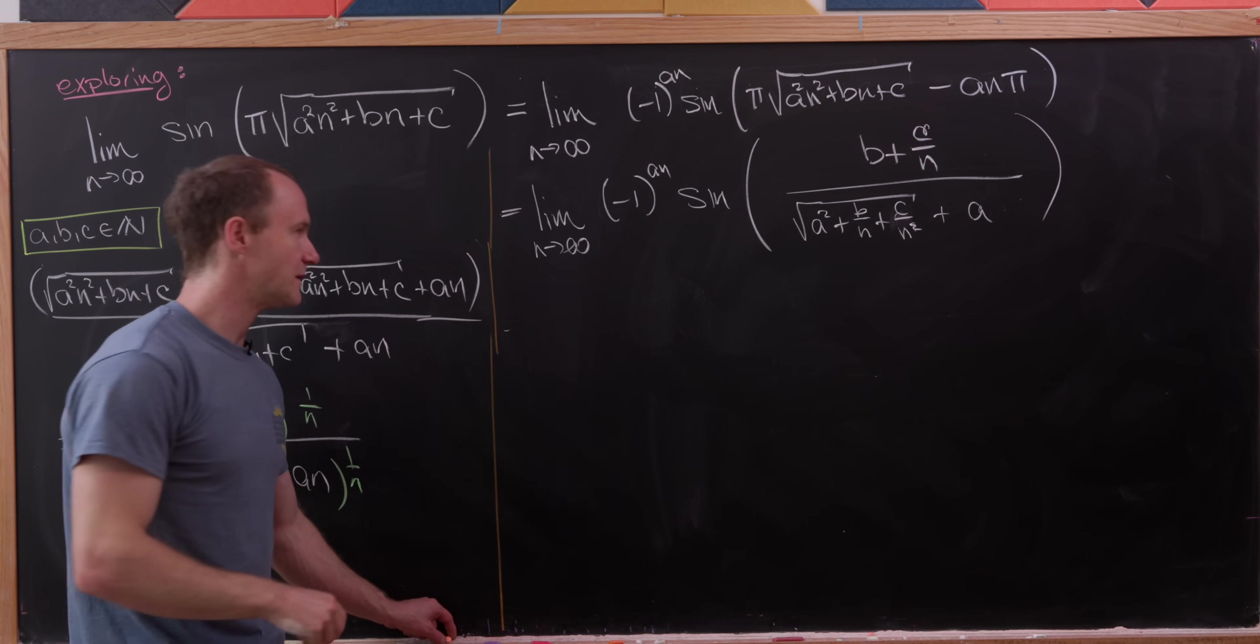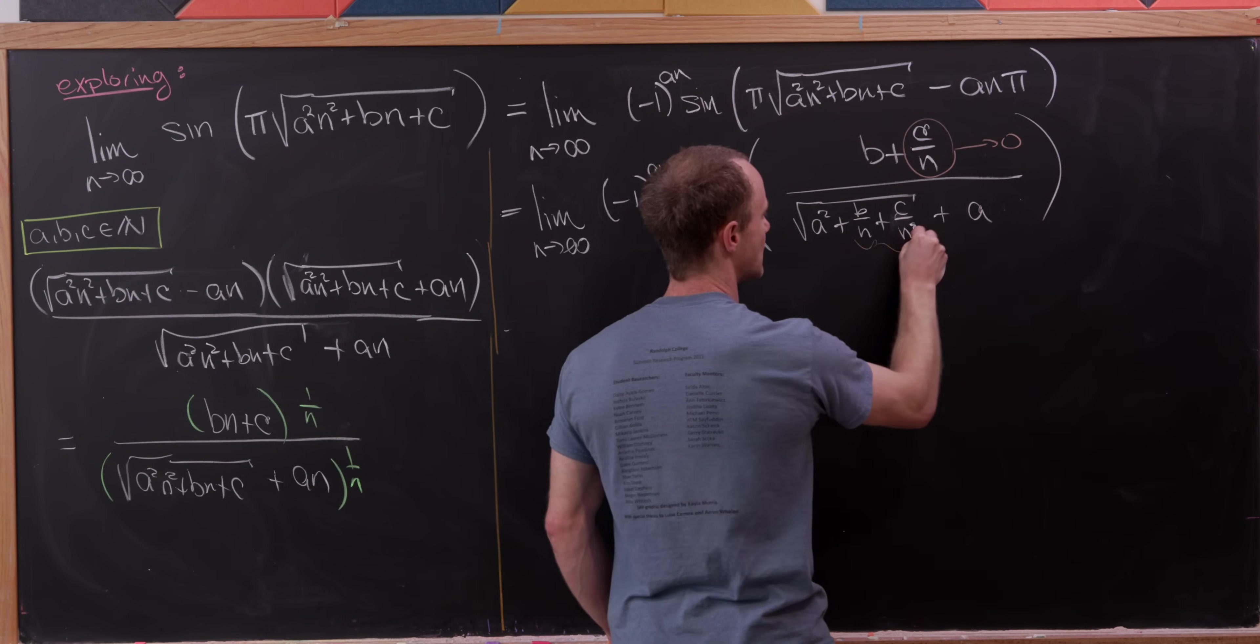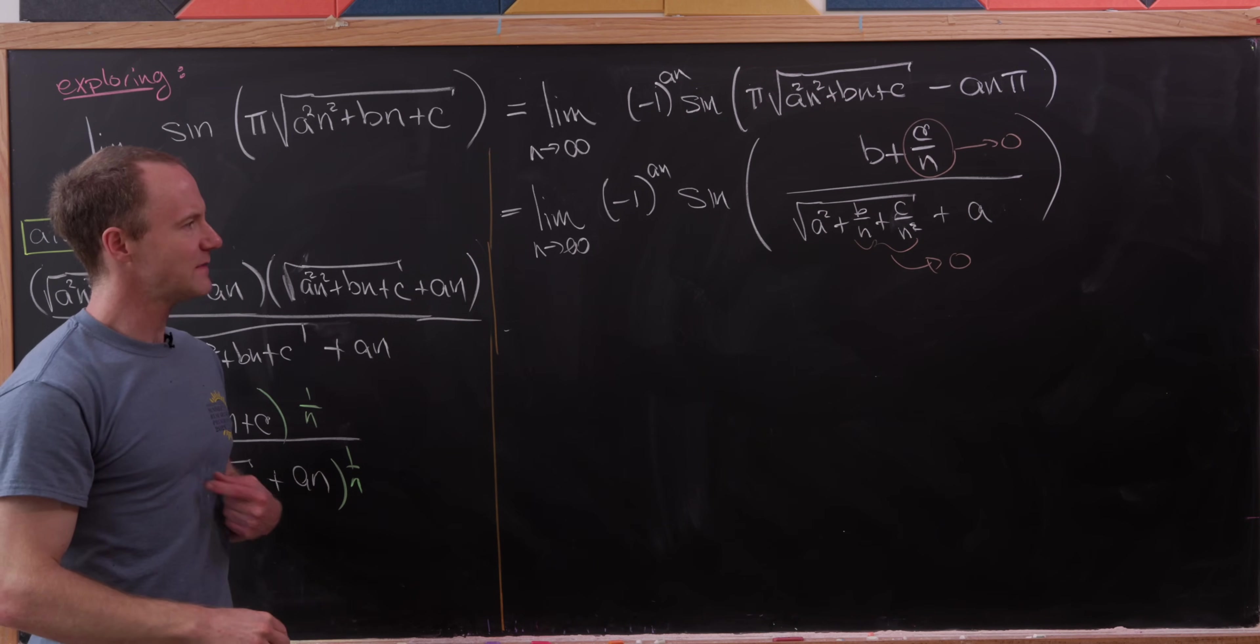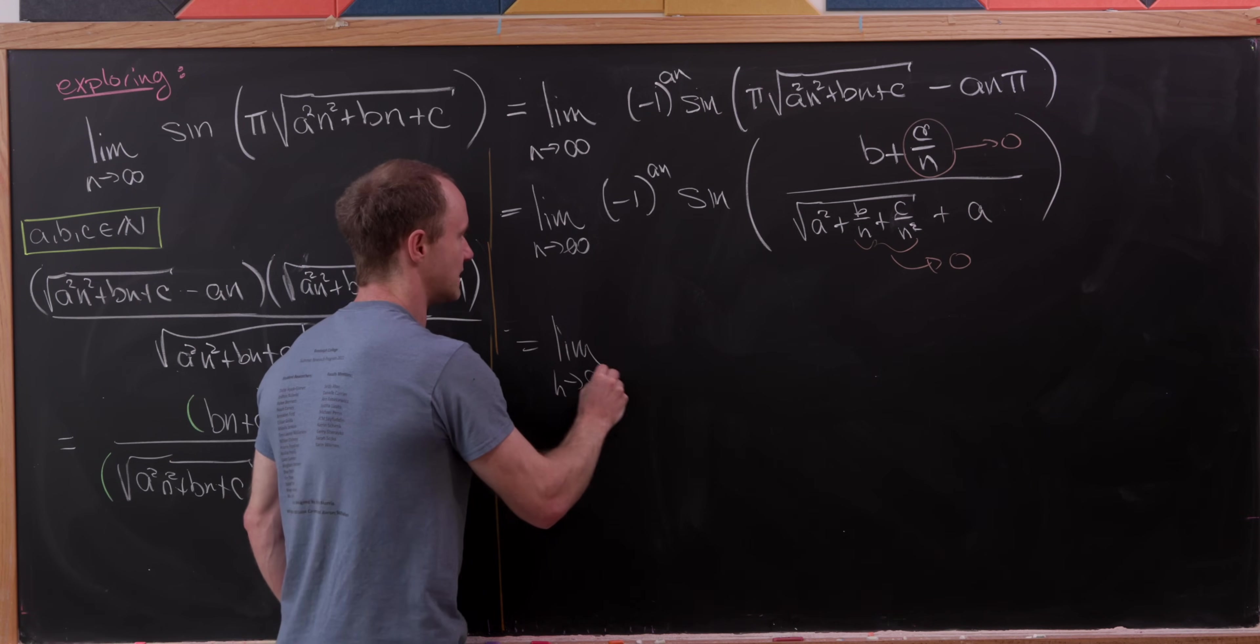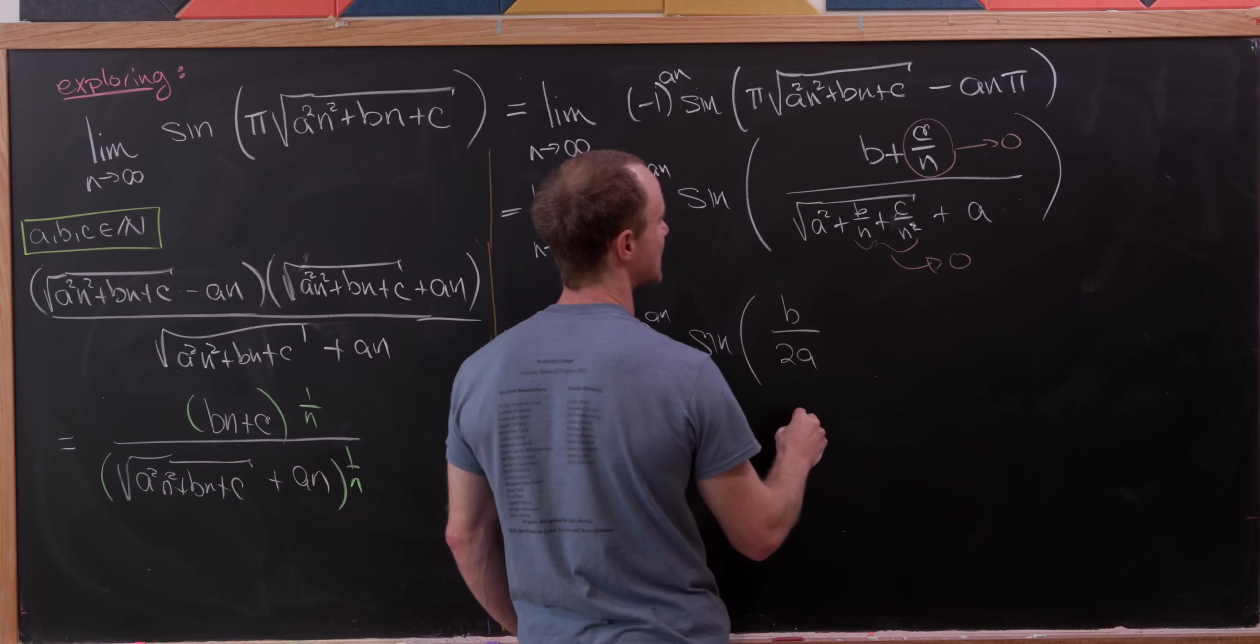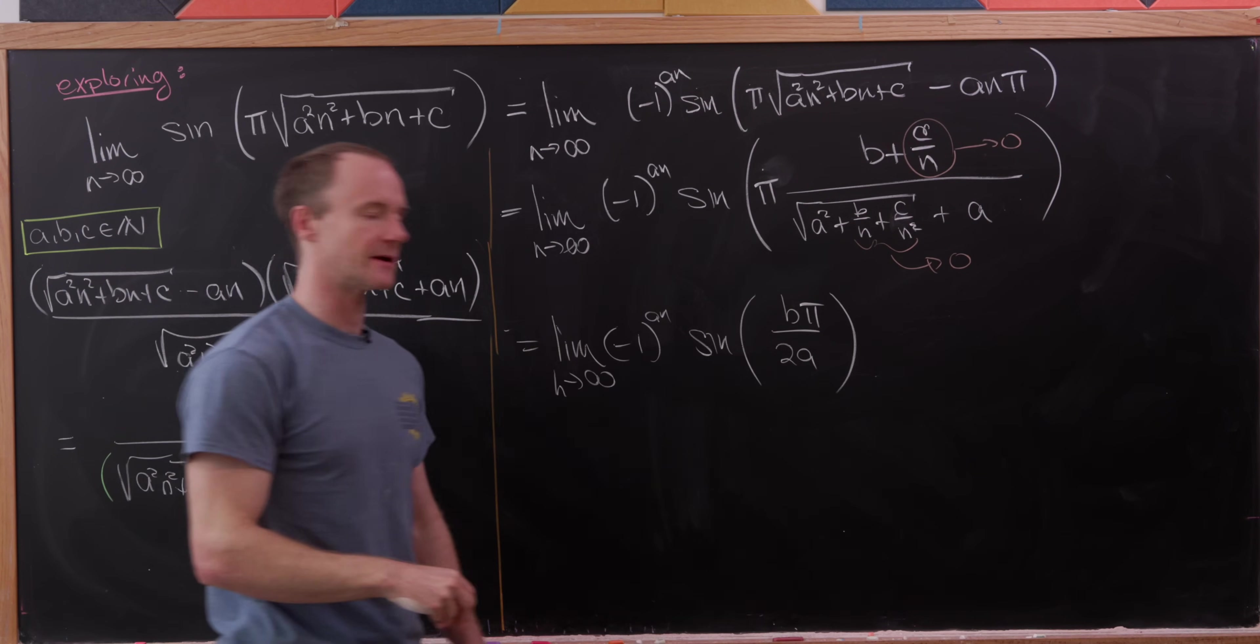But now observe as n gets larger and larger, this c over n term will approach zero, and this b over n and c over n² term will also approach zero. So that means this limit is the same as the limit as n goes to infinity of (-1)^(an) times sine of—let's see, it's going to be b over 2a. Oh, and I left a π out here, so it's bπ over 2a.